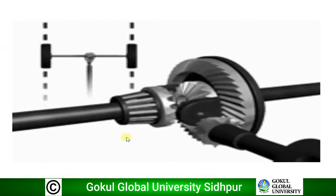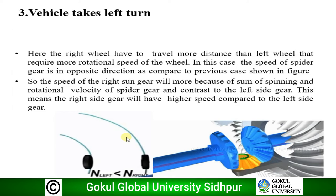On the right side, speed is more because of the sum of spinning and rotational velocity of the spider gear. On the left side, it is the difference between spinning and rotation. So N-left is less than N-right. RPM on the right side is more because of the sum of rotational and spinning velocity, and RPM on the left side is less because of the subtraction of these velocities. This is how the vehicle takes a left turn and the velocity difference creates an RPM difference.